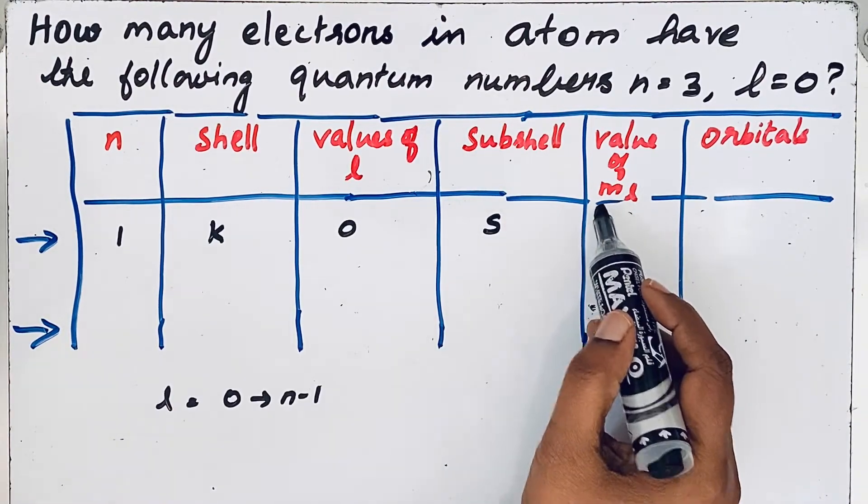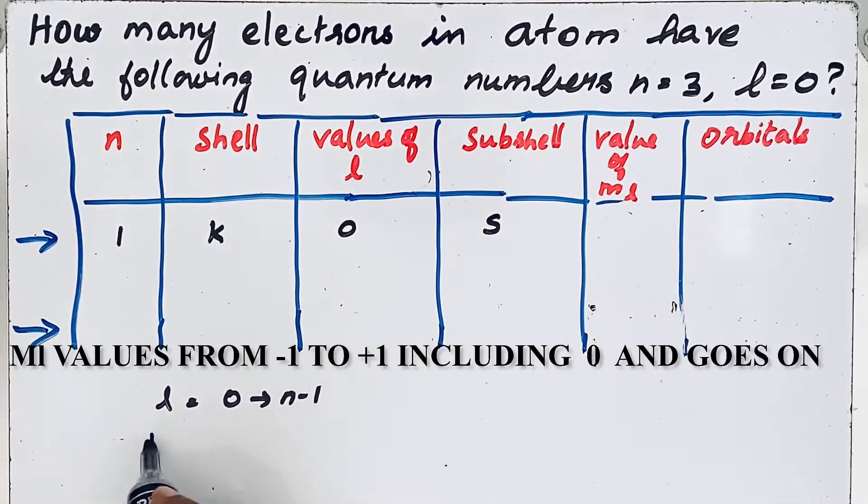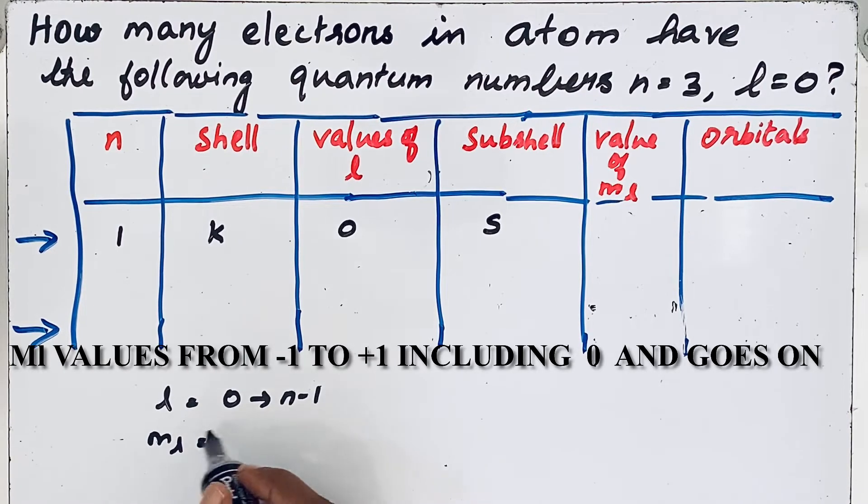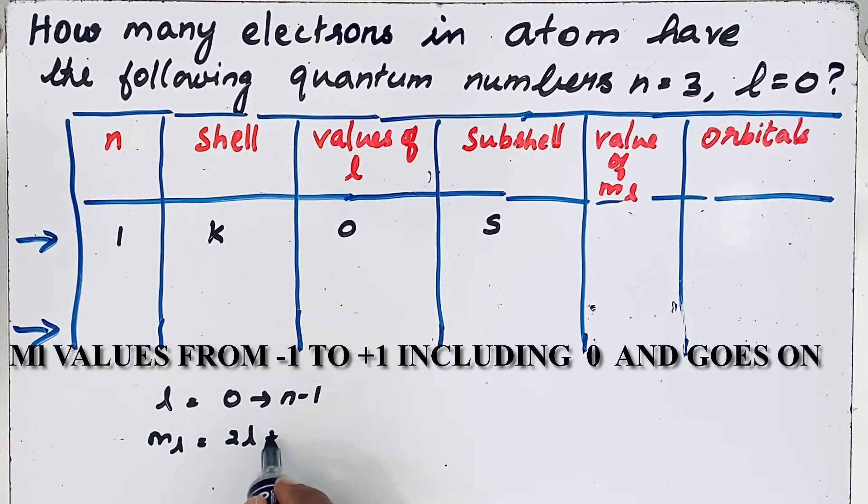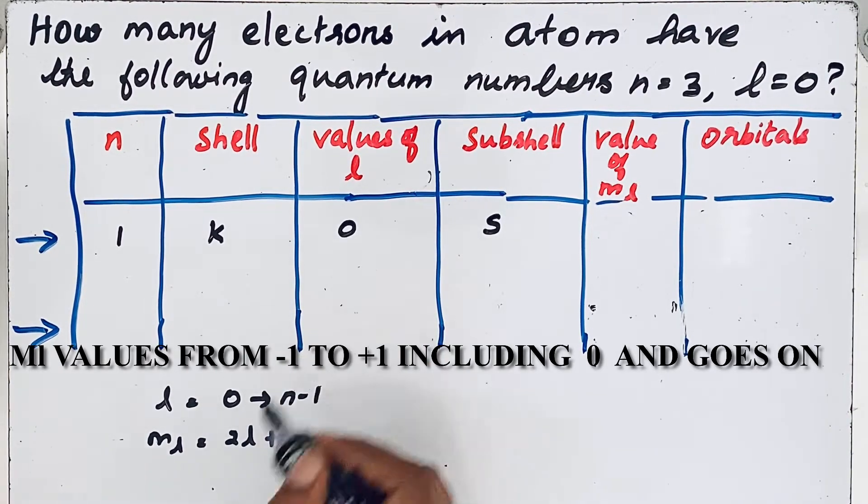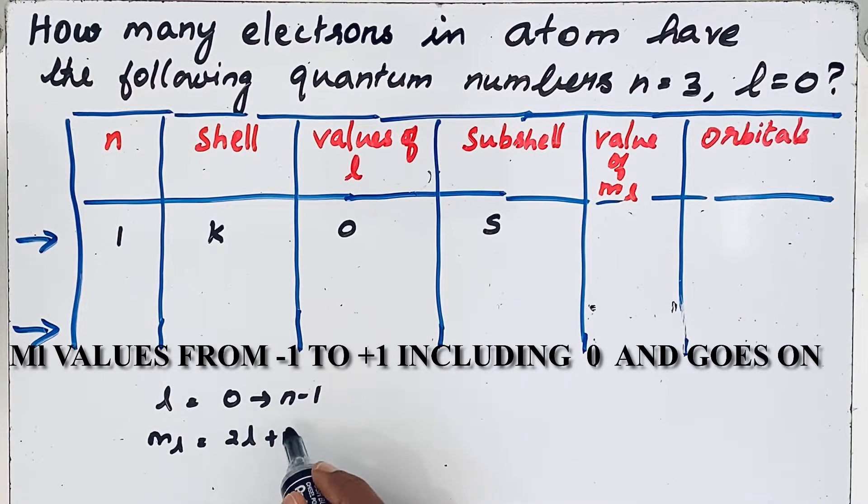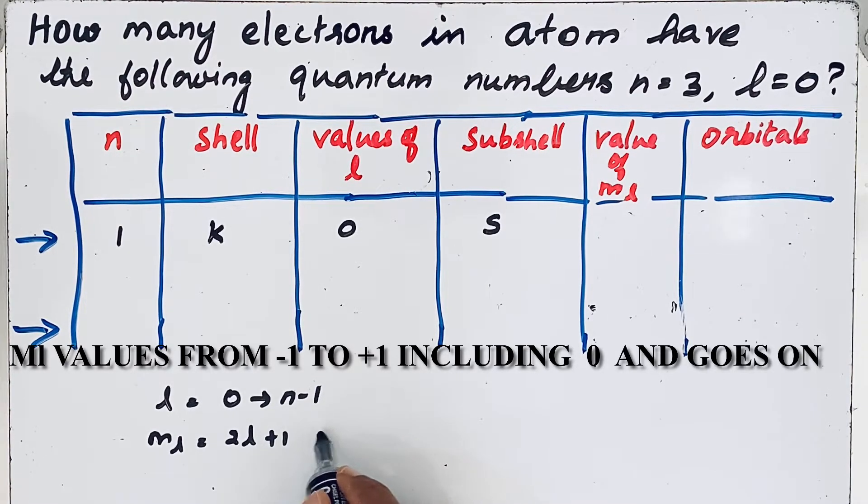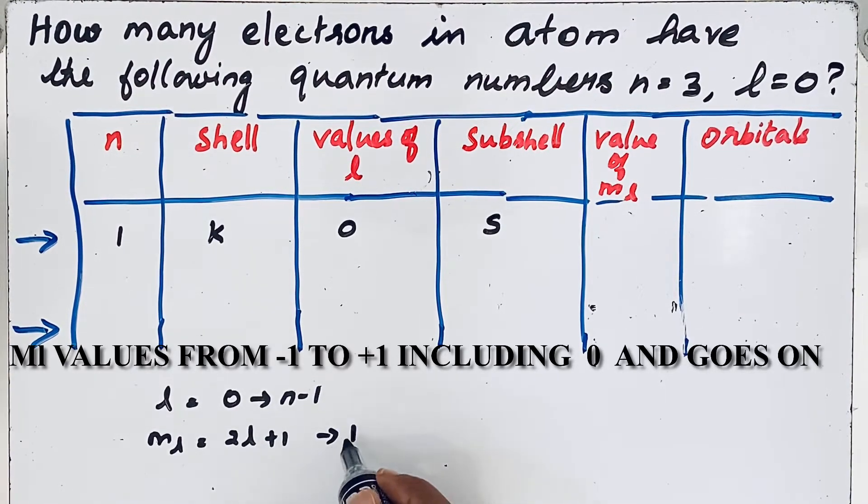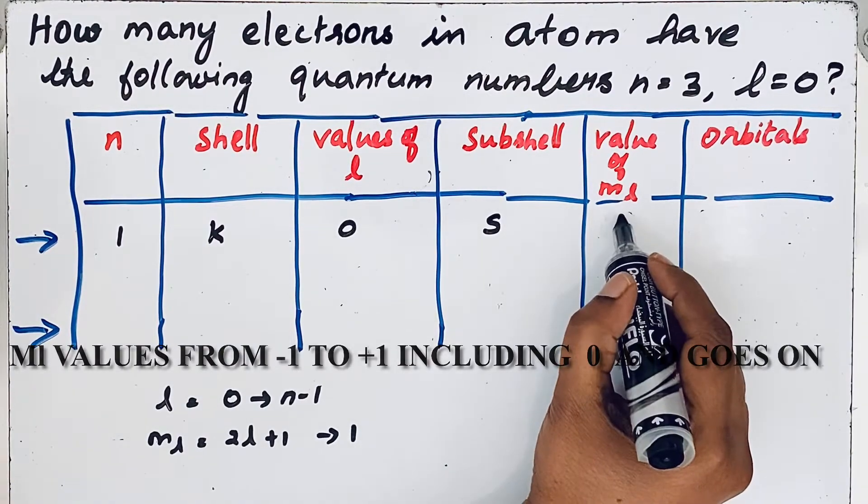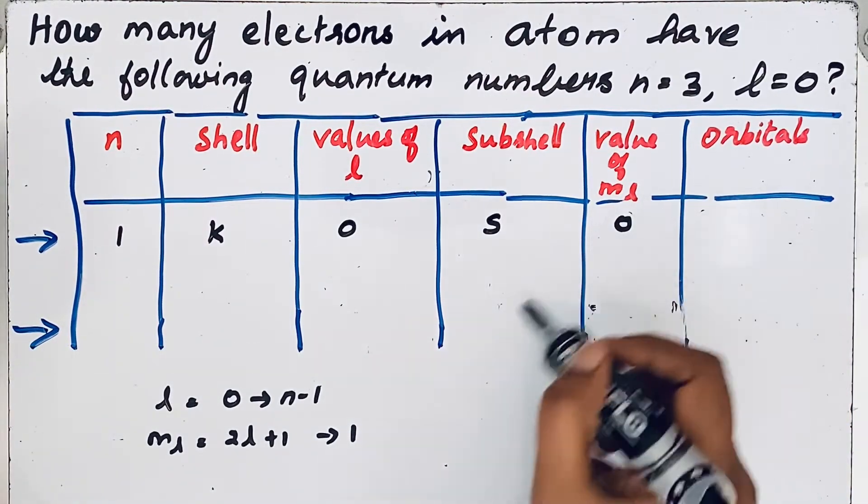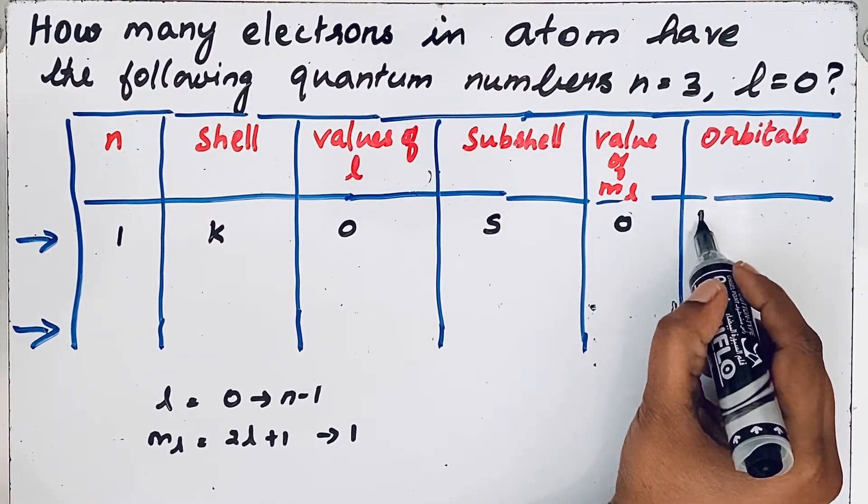The value of ml depends on that l value. So ml is magnetic quantum number 2l plus 1. Here l is 0, so 2 into 0, 0 plus 1. We will get 1. If it is 1, the value we write it like 0. That means we have only one orbital.